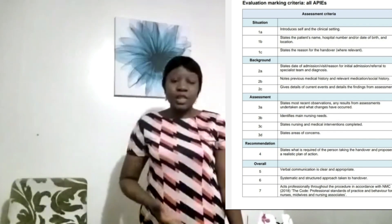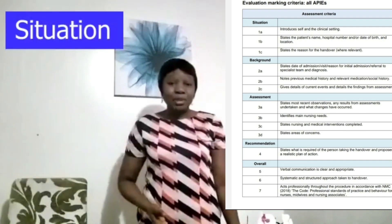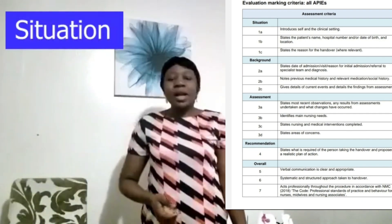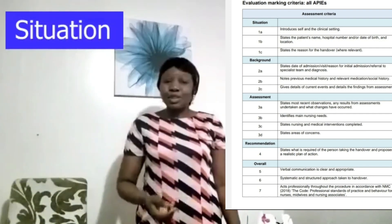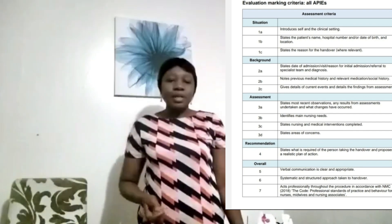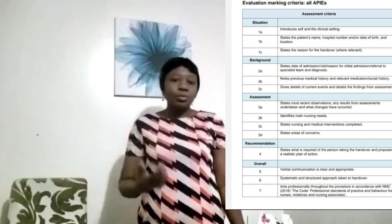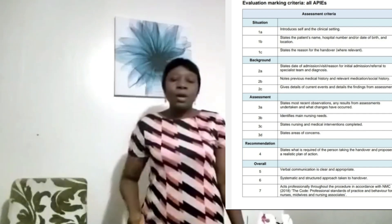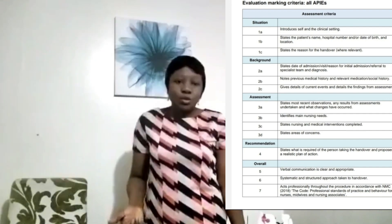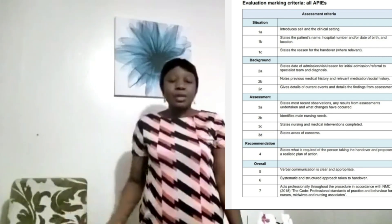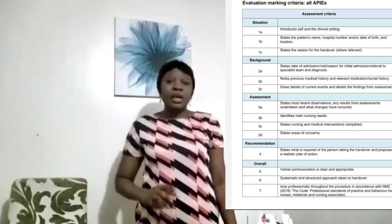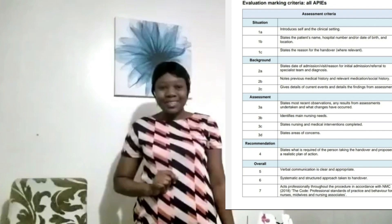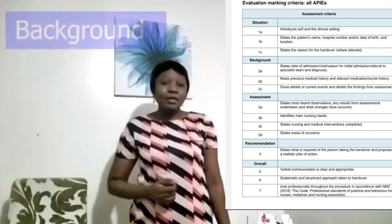In the Situation section, you want to talk about yourself — your name, your clinical setting — and then introduce the patient: their name, date of birth, hospital number, address, and the reason why you're handing that patient over. This reason you'll find on your evaluation question paper. It could be that the patient's condition has deteriorated and needs to be admitted to the ICU, or the patient is not medically fit for discharge, or needs to be stepped down to a community hospital. That is all about Situation — simple isn't it?